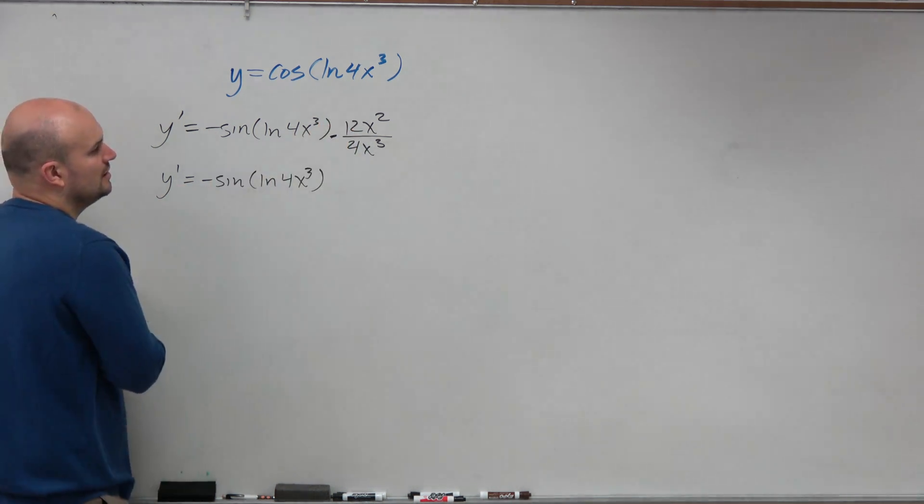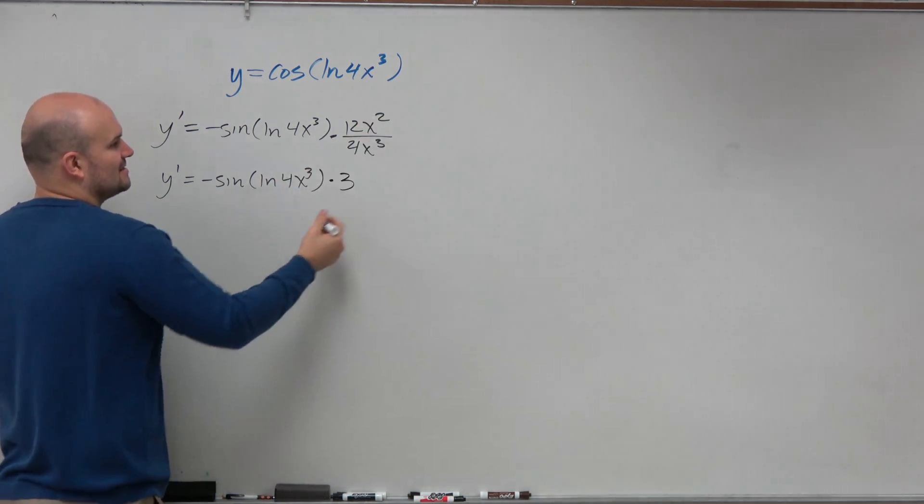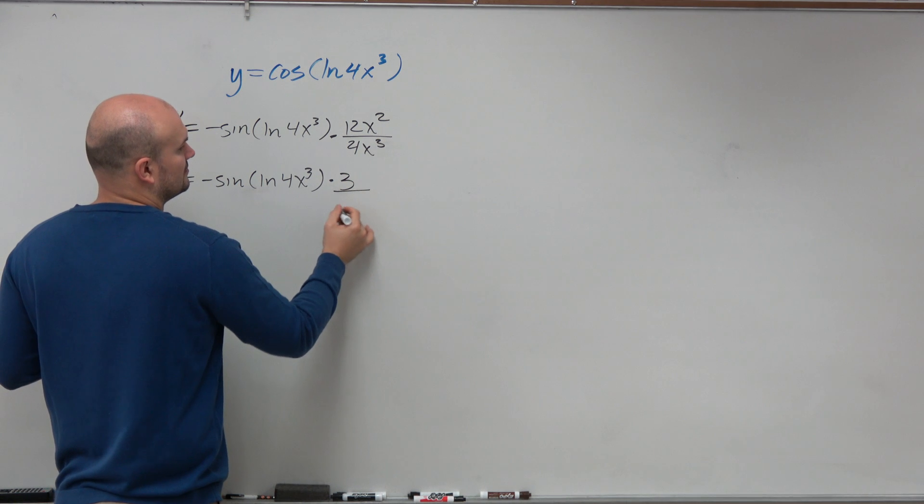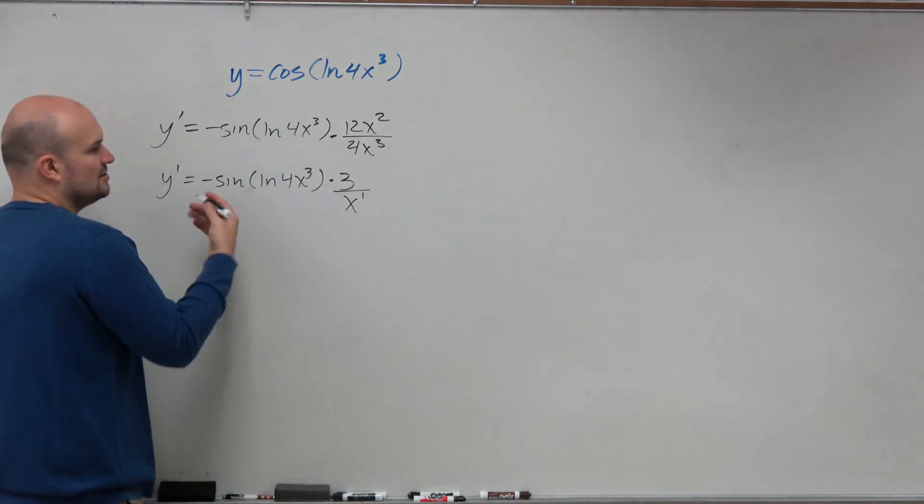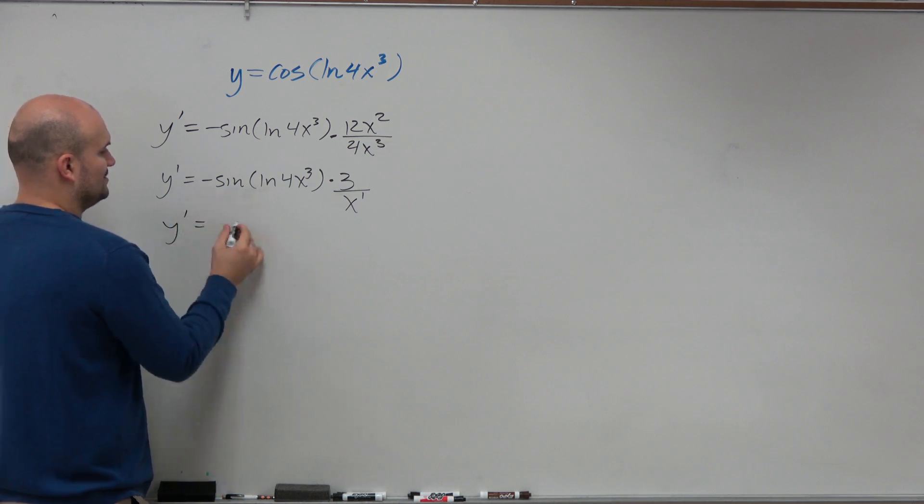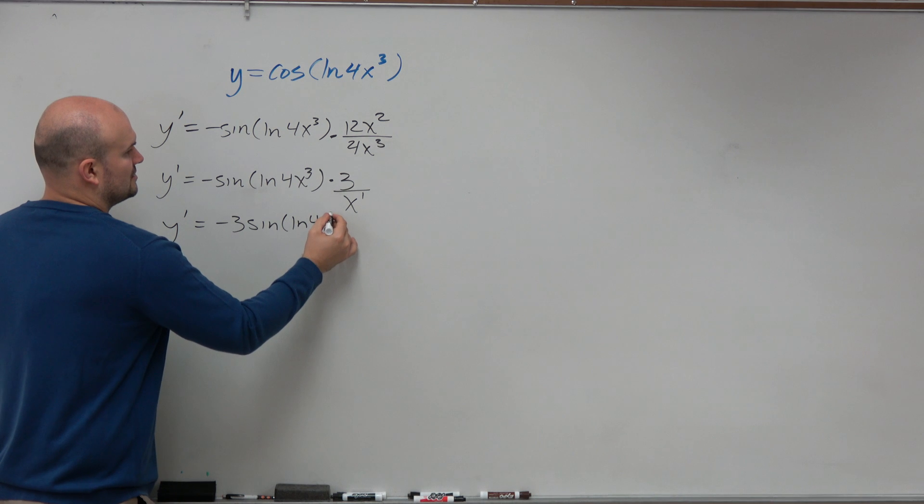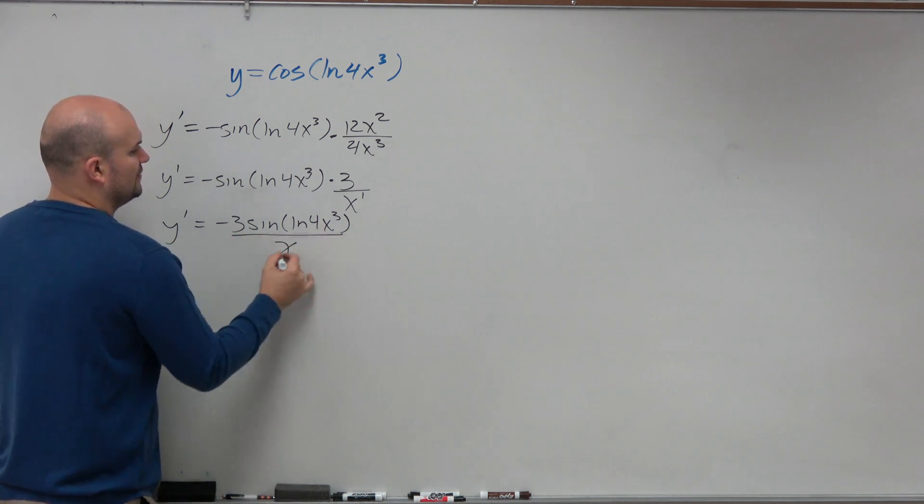12 over 4 is going to be 3. x squared divided by x cubed is going to be x to the first power. So you could rewrite it as a negative power, or we could just rewrite it like this: y prime equals negative 3 sine of ln of 4x cubed all over x.